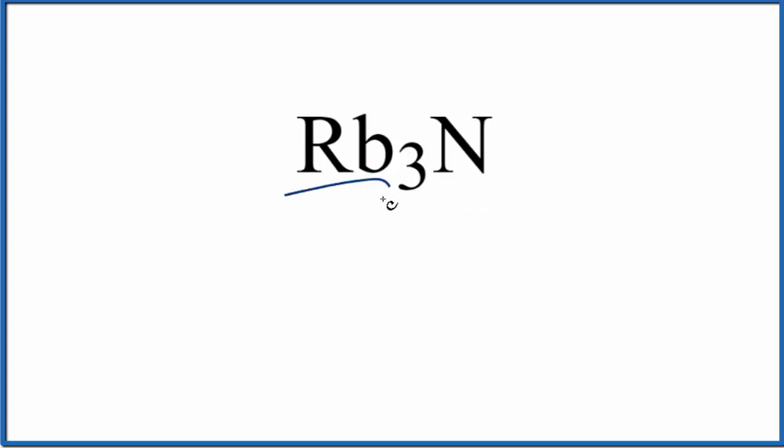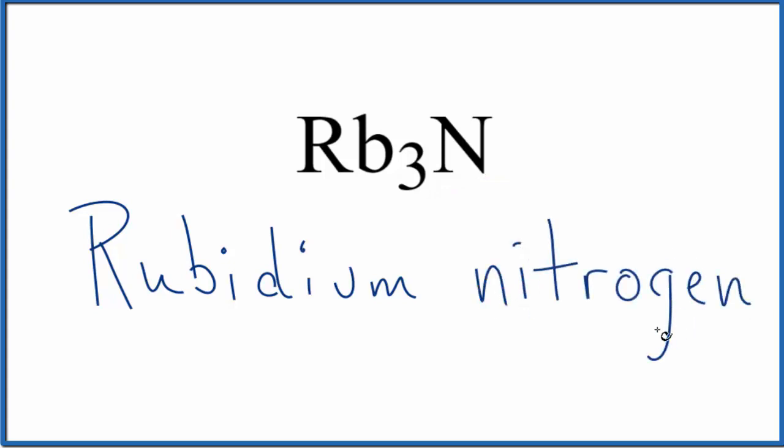So we write the name for Rb as it appears on the periodic table, that's rubidium. And then for N, that's nitrogen, so we write nitrogen, lowercase n, but we cross out the ending and we write ide. That makes the name for Rb₃N, rubidium nitride.